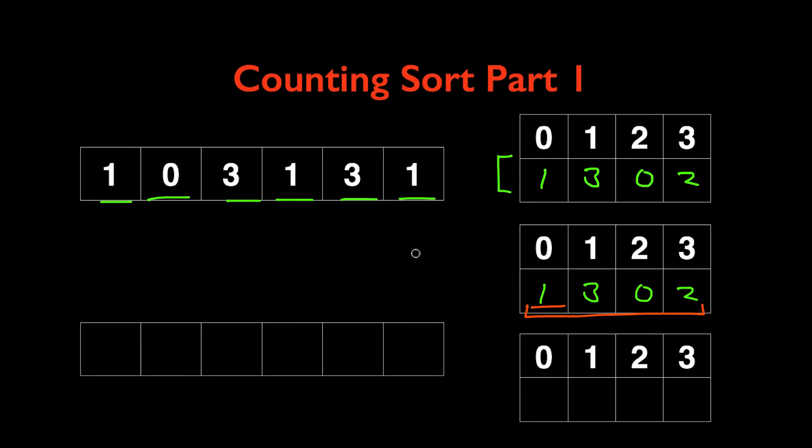What I mean by that is the first number at index 0 stays the same and the second number will be 1 plus 3 equals 4, and the third number will be 4 plus 0 which is equal to 4, and the fourth number at index 3 will be 4 plus 2 which is equal to 6.